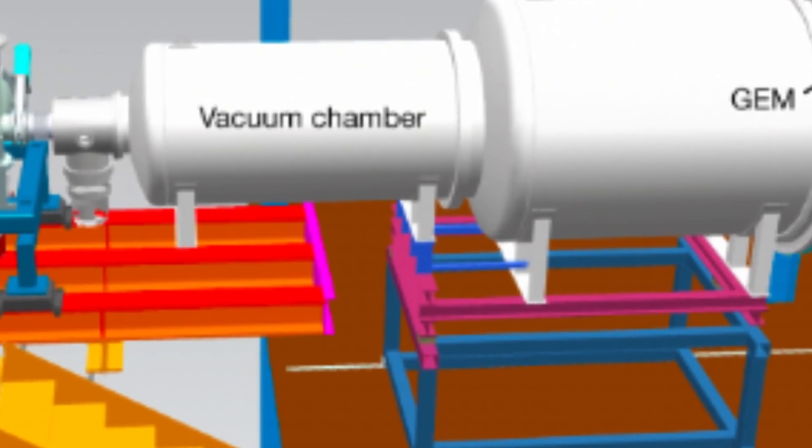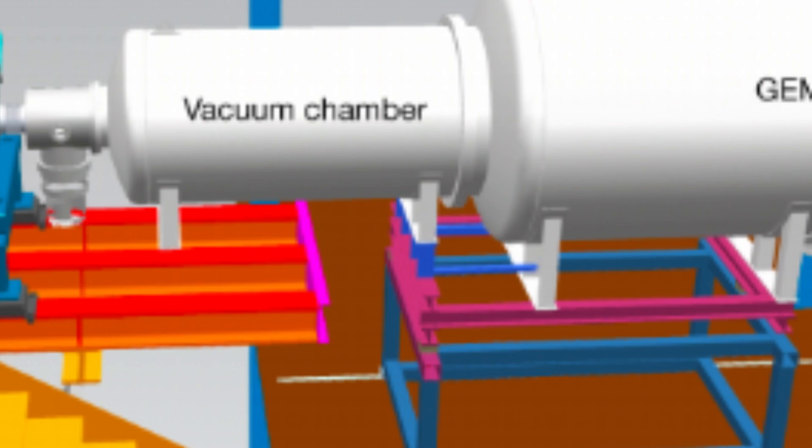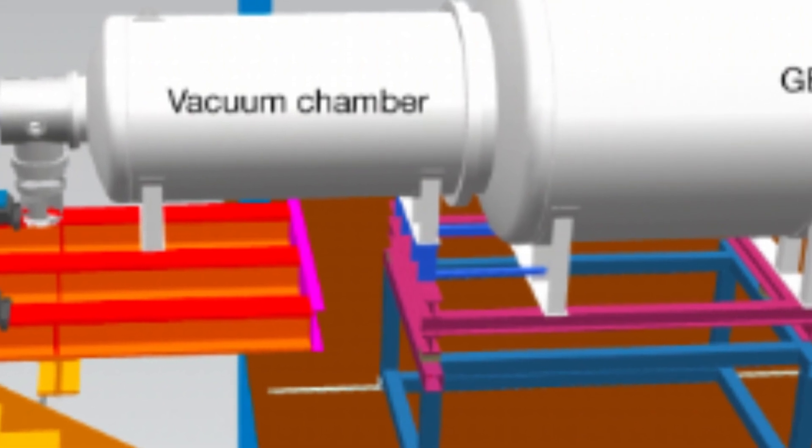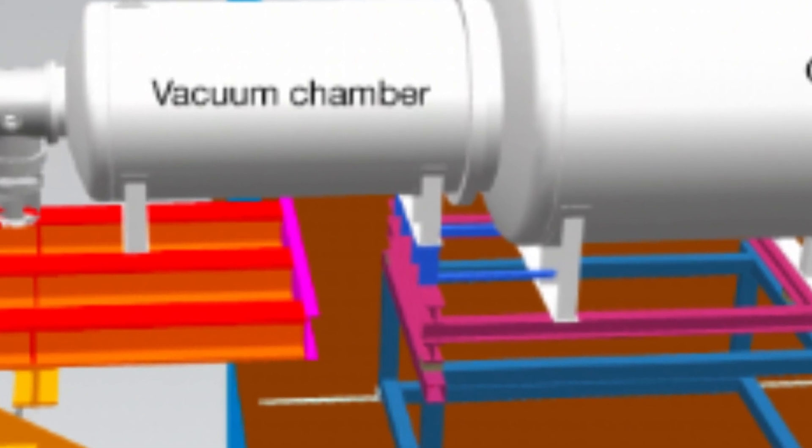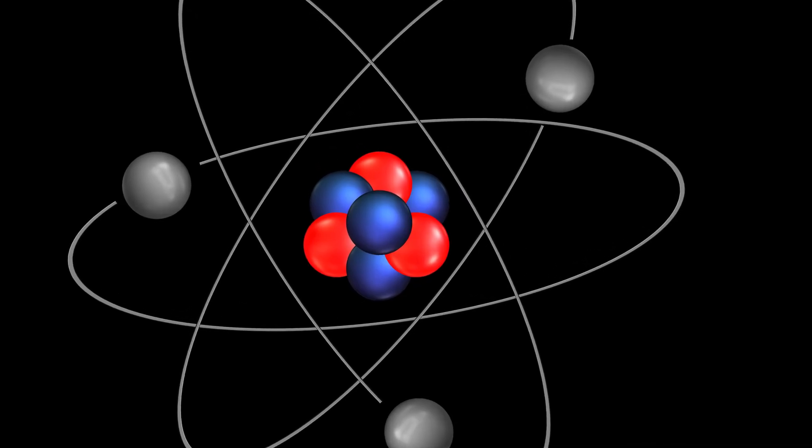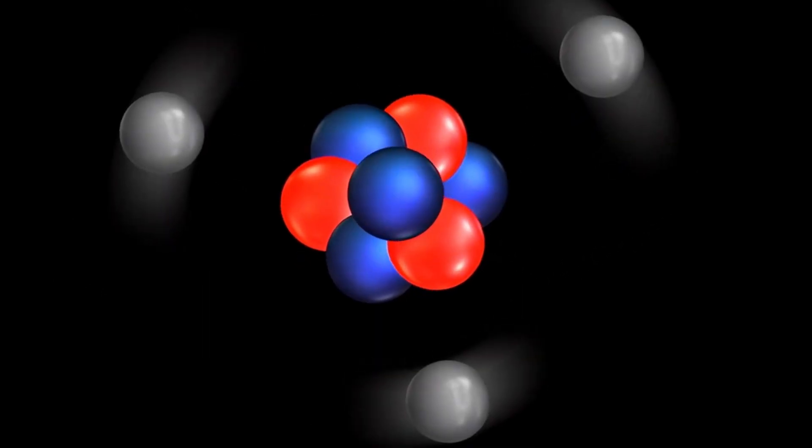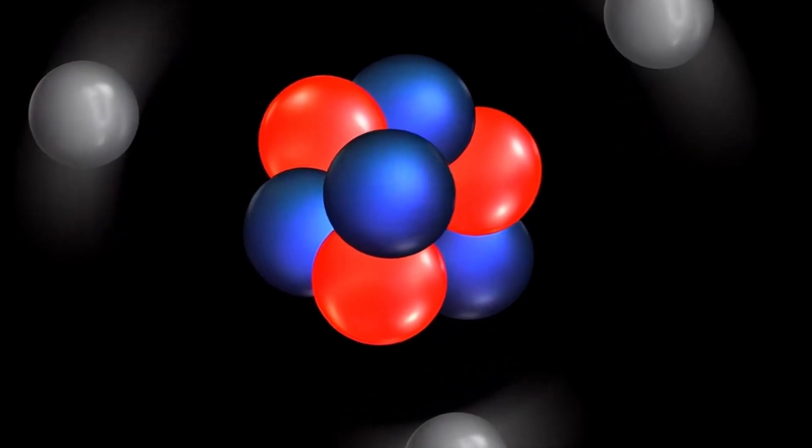But here's the kicker. This setup only worked because of Mainz Microtron's exceptionally precise and stable electron beam. Also, they had to use a long, thin strip of lithium and line it up perfectly with the beam, something that's almost never done in this kind of experiment.